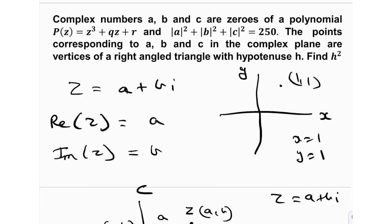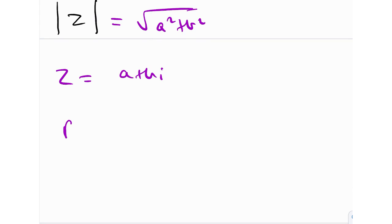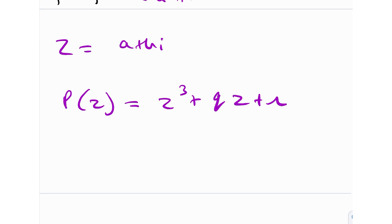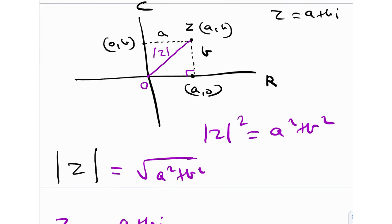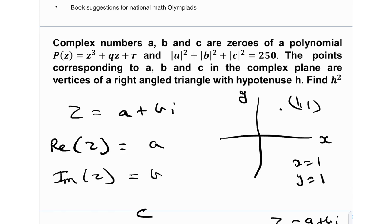Now let's read the problem — there's quite a bit to unravel. The complex numbers a, b, and c are zeros of the polynomial p(z) = z³ + qz + r. They've also given that a, b, and c are roots of this polynomial. The condition is that the sum of squares of the moduli is 250, and the points corresponding to a, b, and c in the complex plane are vertices of a right-angled triangle with hypotenuse h. Find h².